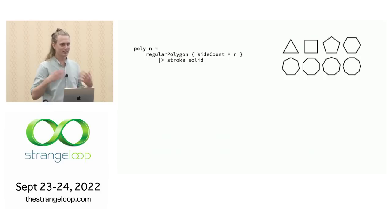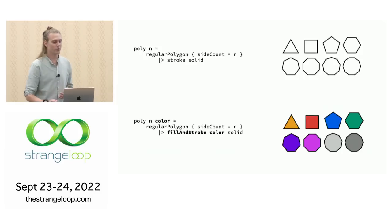The only thing that is left is a splash of color. And our polygon function we had before, we can add another parameter to it and fill the shapes with that color in addition to stroking them. That's a very quick introduction to what it's like working in Diagrammer.